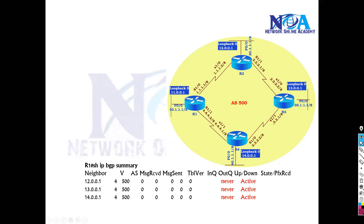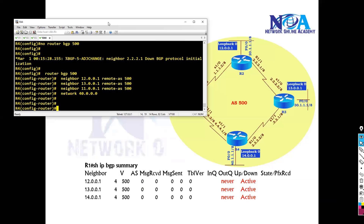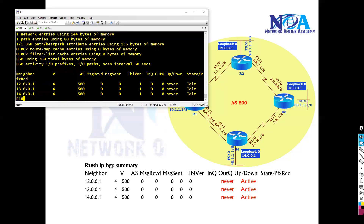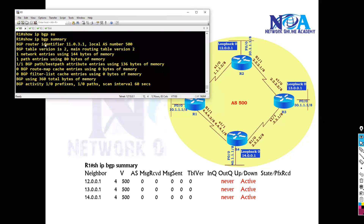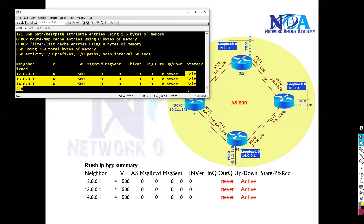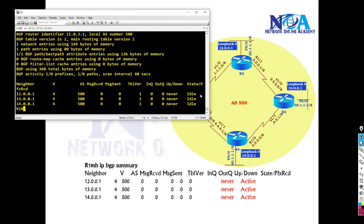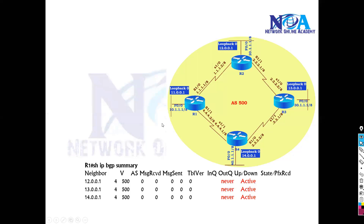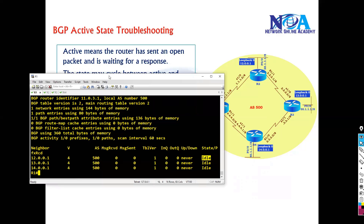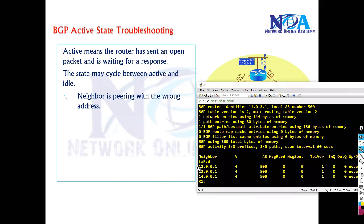Once I apply this configuration, I'm expecting some kind of neighbor relationship. To verify, I run 'show ip BGP summary'. I'm trying to form neighbors with Router 2, Router 3, and Router 4, but you can see the state is either idle or active. Whenever you see the state stuck as idle or active for a long time, there is some problem. There are a few troubleshooting things to check — you might be configuring the neighbor with the wrong IP address.